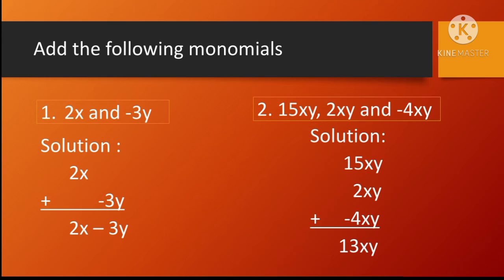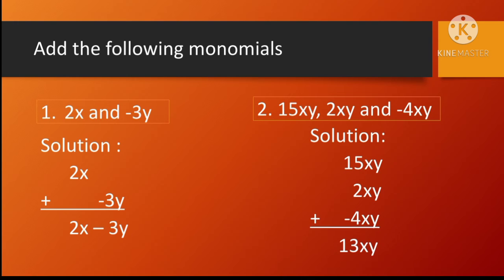Example number two: 15xy, 2xy, and negative 4xy. Solution: 15xy plus 2xy plus negative 4xy. 15 plus 2 have the same signs, so it will be equal to positive 17xy. And 17xy plus negative 4xy.